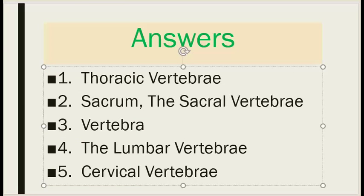Answers. Number one is the thoracic vertebrae. Number two: sacrum and the sacral vertebrae. Number three: vertebrae. Number four: lumbar vertebrae. Number five: the cervical vertebrae.